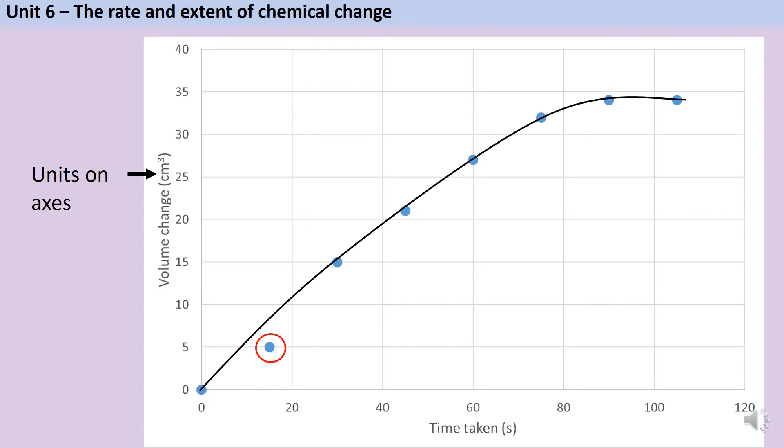You can see here that my first reading was actually quite low, and this is quite common for this experiment because chances are some gas was lost while I was trying to put on my bung, so that first reading may not have been accurate. I don't want to force my line of best fit to go through that piece of data, I just draw a curve that follows the general shape of the data.